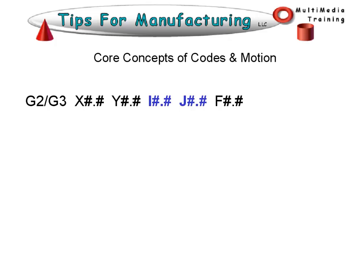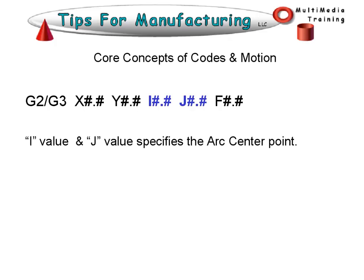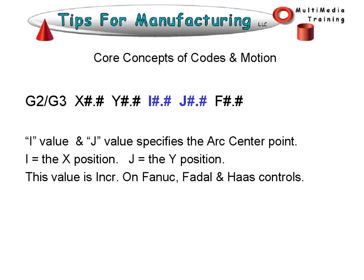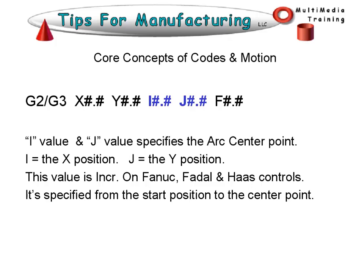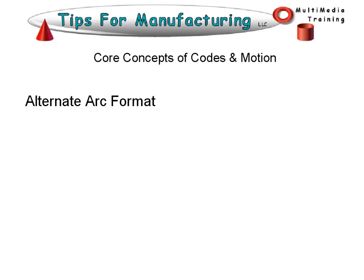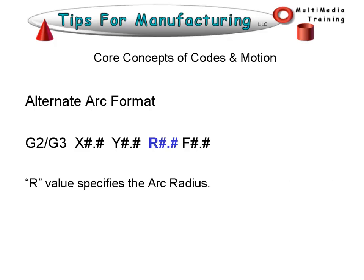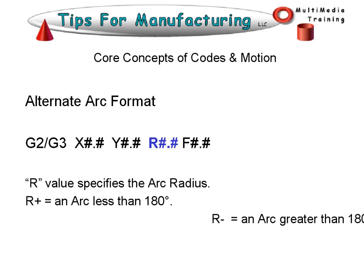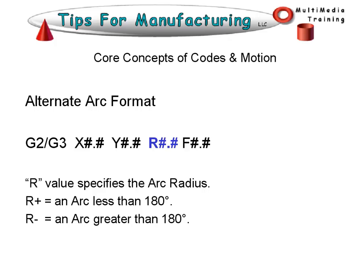With G02 or G03, the I and J values specify the arc center point. I is the X position of the center, and J is the Y position of the center. This value is incremental on FANUC, FIDEL, and HAAS controls, specified from the start position to the center point. There is an alternate arc format — G2 or G3 with the XY position using an R value for radius. An R positive value means the arc will be less than 180 degrees; a negative R value means the arc will be greater than 180 degrees.